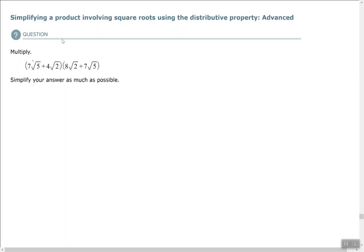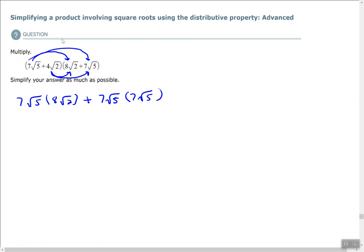Distributing 7 times the square root of 5: we get 7 times the square root of 5 times 8 times the square root of 2, plus 7 times the square root of 5 times 7 times the square root of 5. Then distributing 4 times the square root of 2 to each term: 4 times the square root of 2 times 8 times the square root of 2, plus 4 times the square root of 2 times 7 times the square root of 5.